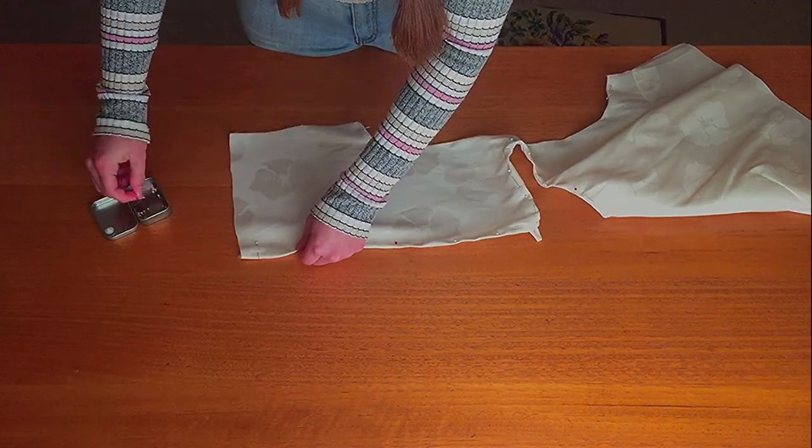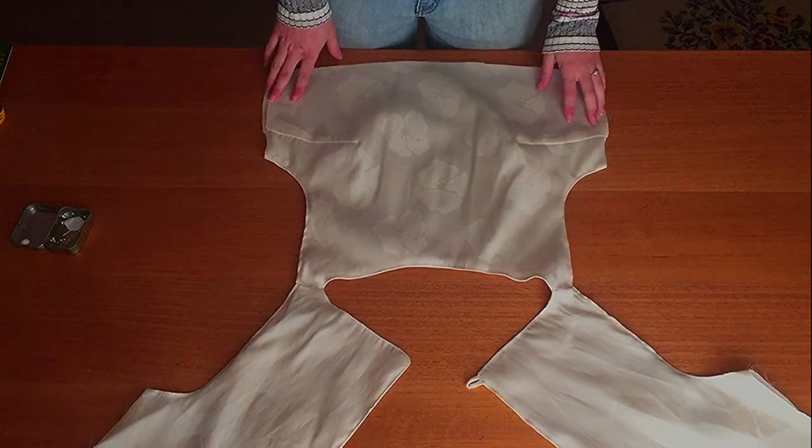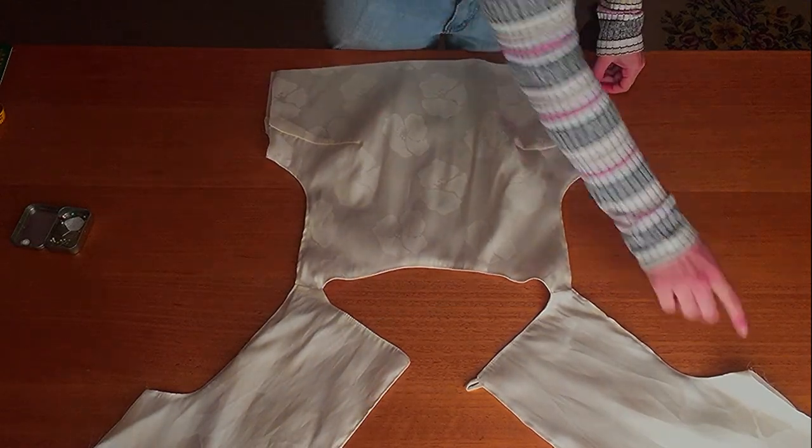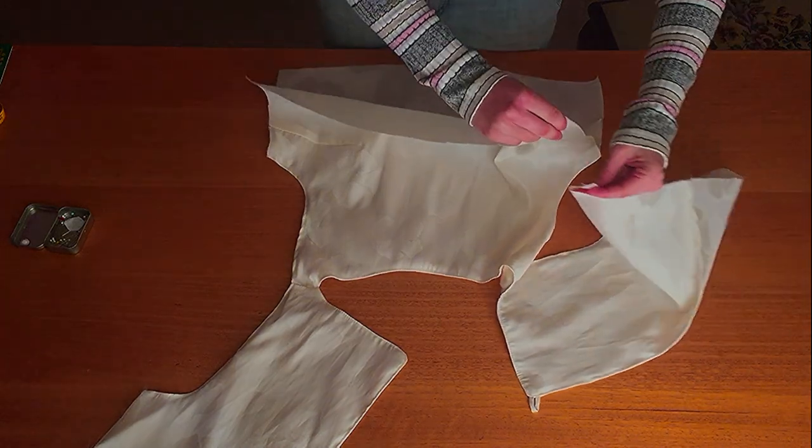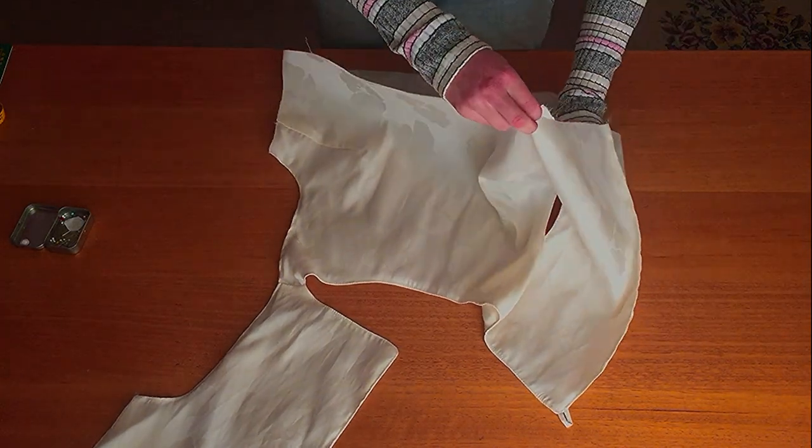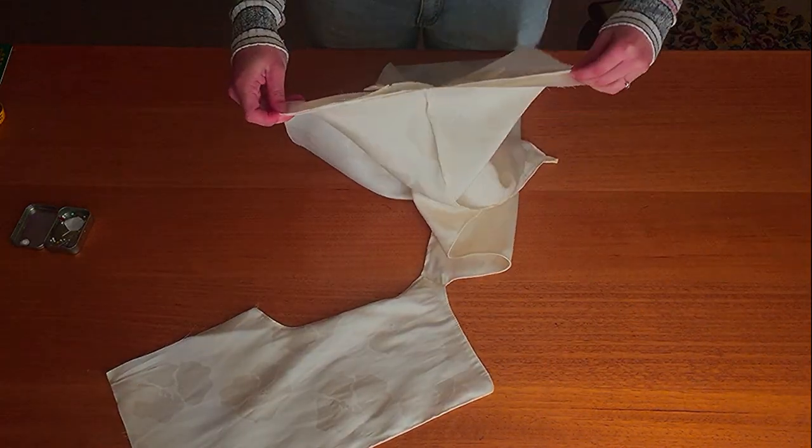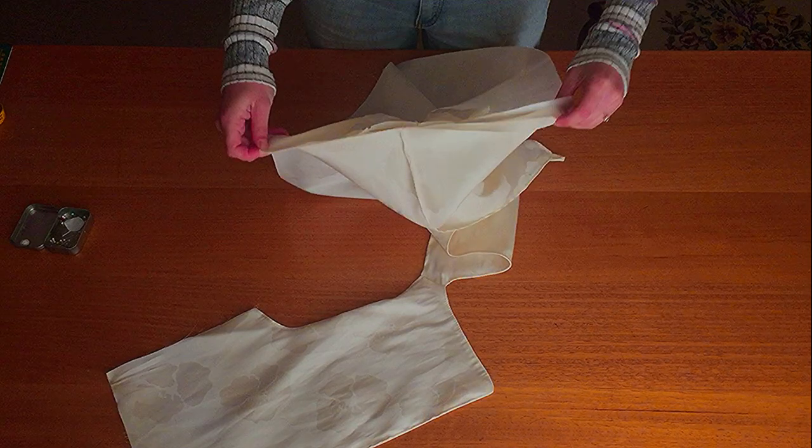After that's done you're going to go ahead and sew the side seams together. You'll do this by opening up the front side seam and then doing the same with the matching back and stitching them together. Make sure you're still stitching right sides together, pinning starting from the underarm seam to make sure it matches evenly.